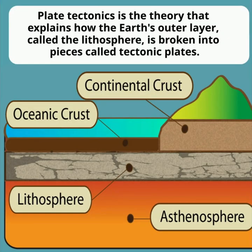You see, plate tectonics is the theory that explains how the Earth's outer layer, called the lithosphere, is broken into pieces called tectonic plates. These plates float on a softer, more fluid layer beneath them, the asthenosphere. And even though they move slowly, just a few centimeters per year, this movement shapes the Earth's surface over millions of years.